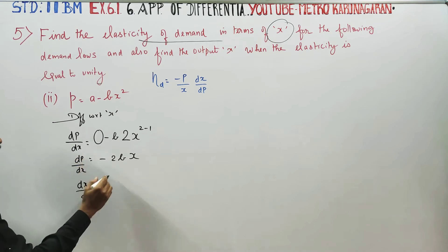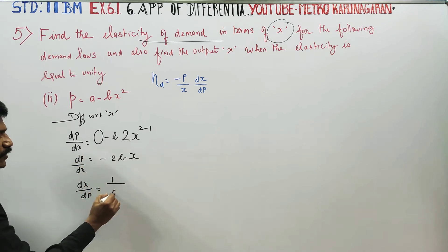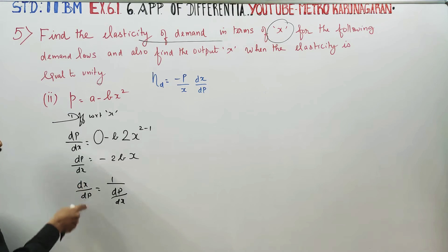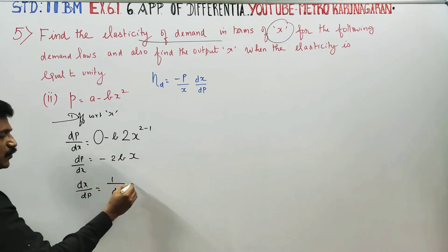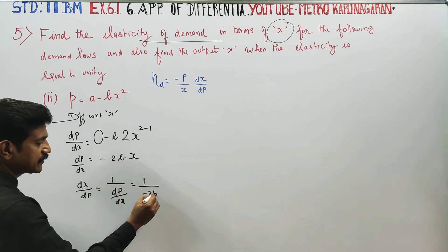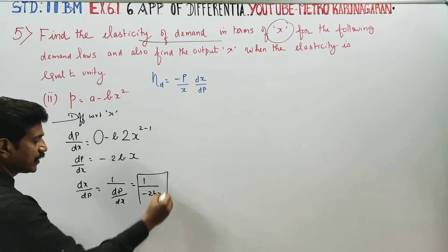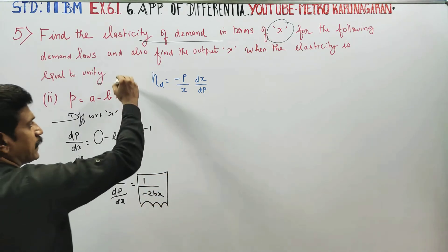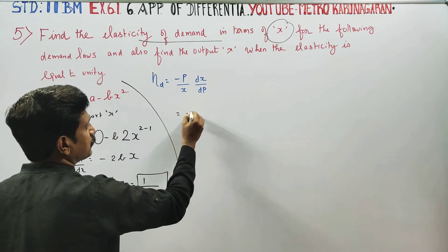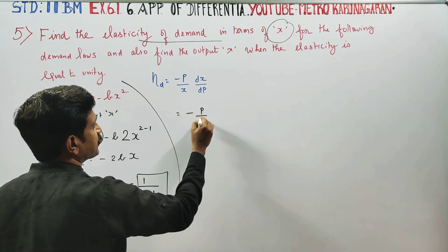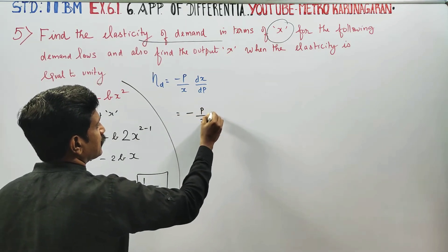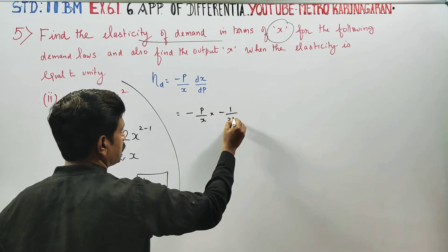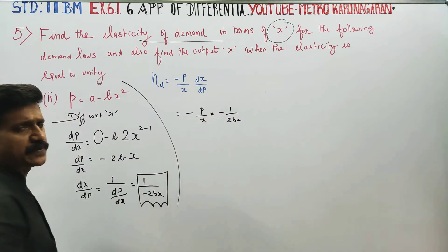Plugging into the elasticity formula: it is equal to minus P by x, times dx by dp. This gives us minus 1 by 2Bx. So the elasticity of demand is equal to minus 1 by 2Bx.